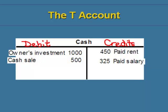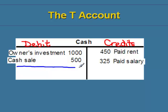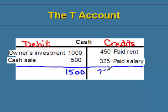Once we have all of the transactions in the T-account, we want to find out the balance of our cash — how much cash does the company actually have? There are basically three steps to determine the balance of an account. The first step is to calculate the totals of the debit side and the credit side. We add the debit side first — we have $1,500 total. Then we add up the credit side and get $775.